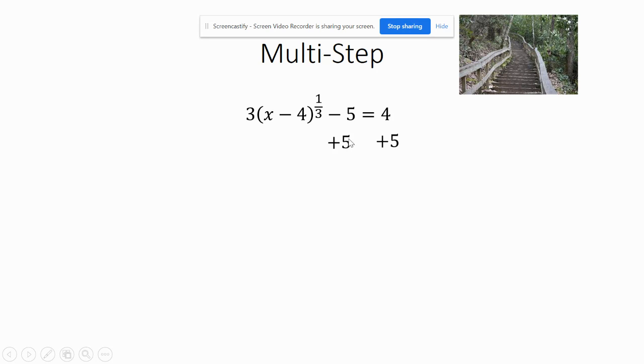So I add 5 to each side. 4 plus 5 is 9. And then this would be like 3x equals 9, so you would divide by 3. I'm doing the same thing here. I have 3 times this quantity, so I'm going to undo that by dividing by 3.